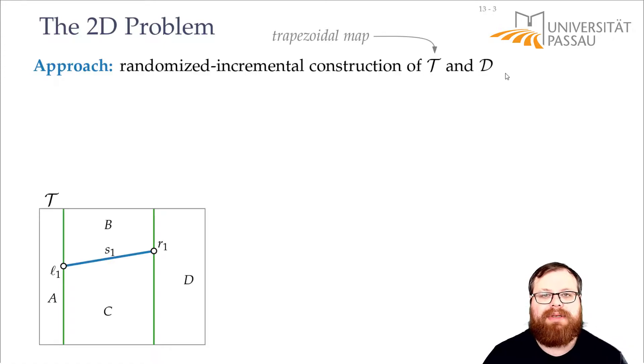Let's have a look at one example. So let's say we just start with some segment S1, we have the left point L1, the right point R1, so this is the trapezoidal map we get from it.